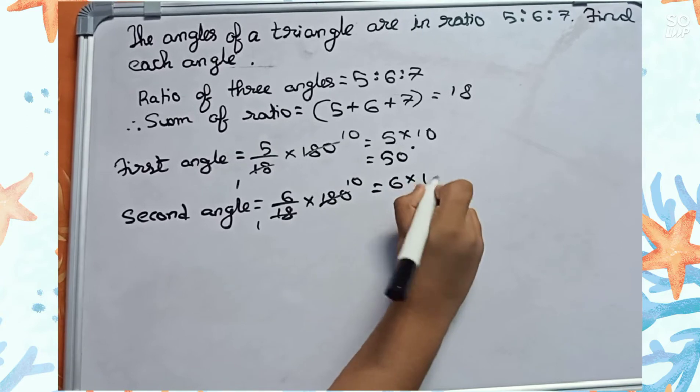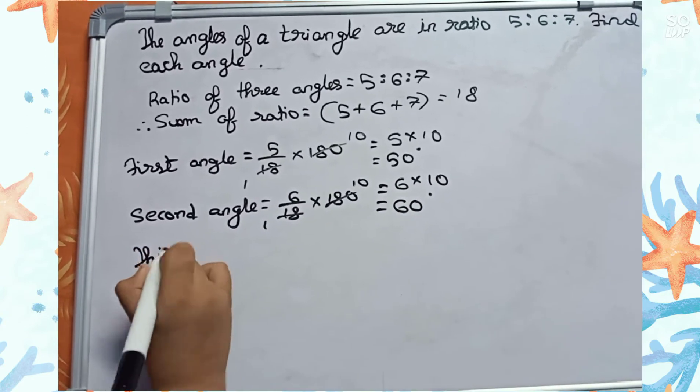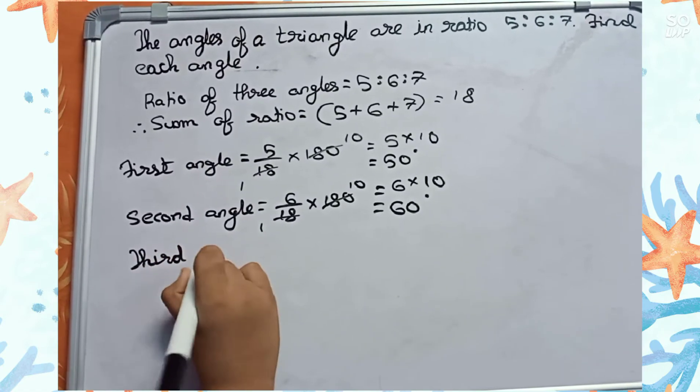6 by 18 into 180 equals 60 degrees. And third angle: